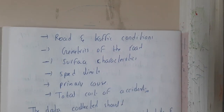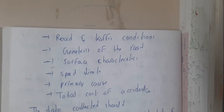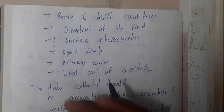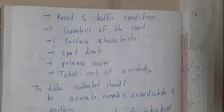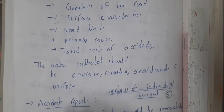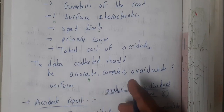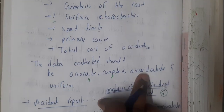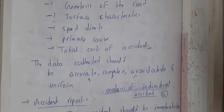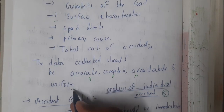Additional data collected includes road and traffic condition at the time, surface characteristics such as whether the road is slippery due to rain, speed limit and whether the driver was over-speeding, and primary clauses like the total cost of the accident. The collected data should follow key properties: it should be accurate and maximum, handle complex types of data, be available to all team members working on the project, and be uniform.